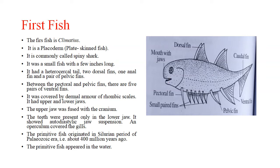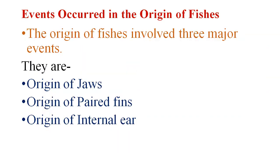It showed autodiastylic jaw suspension, and the operculum covered the gills — you can see this is the operculum. The primitive fish originated in the Silurian period of the Paleozoic era, that is about 400 million years ago, when the primitive fish appeared in the water.